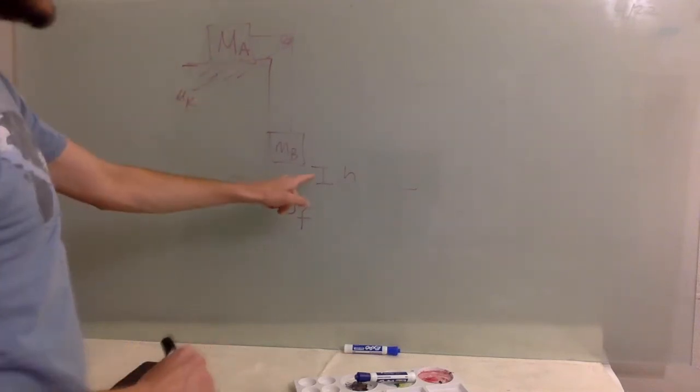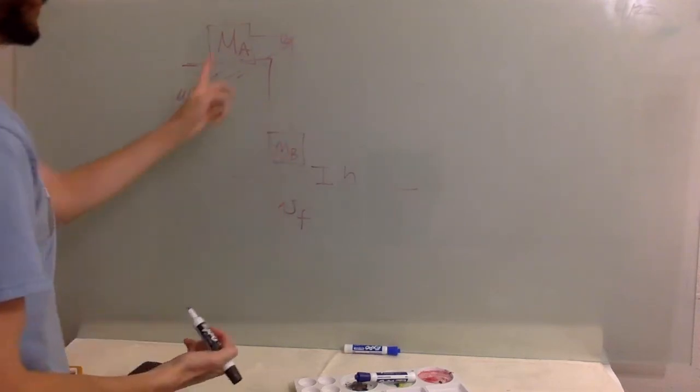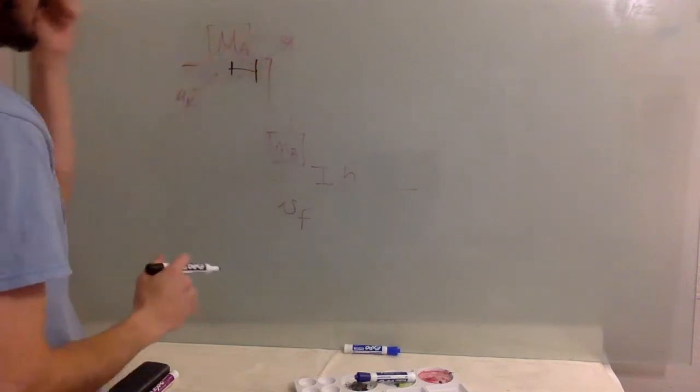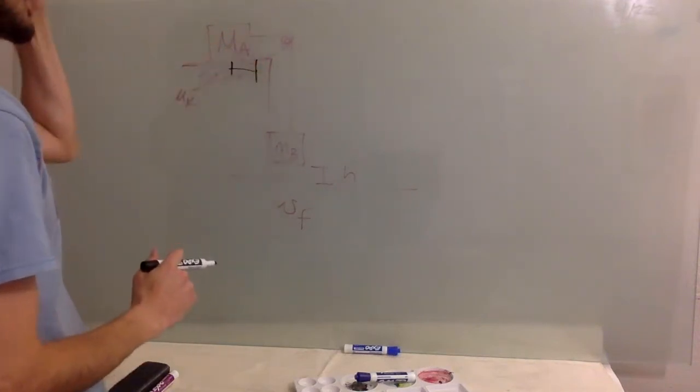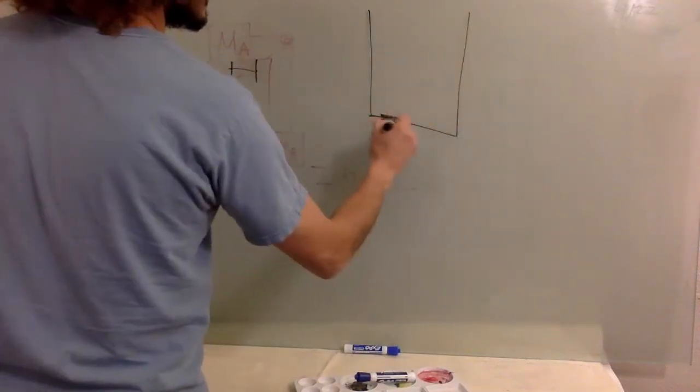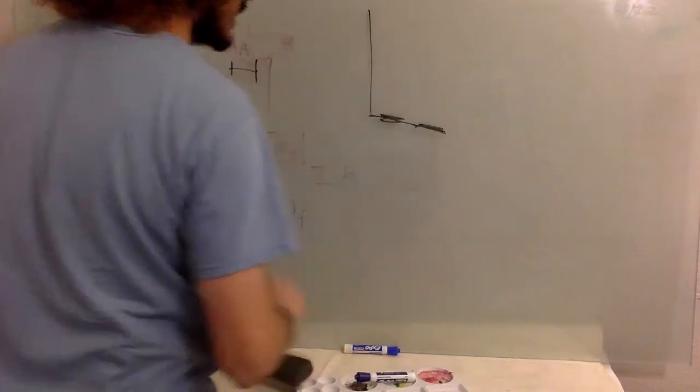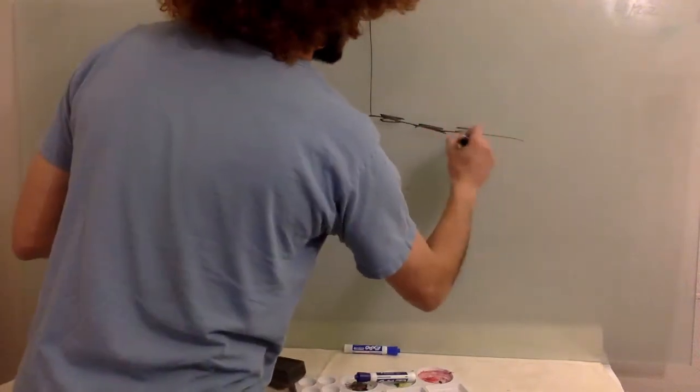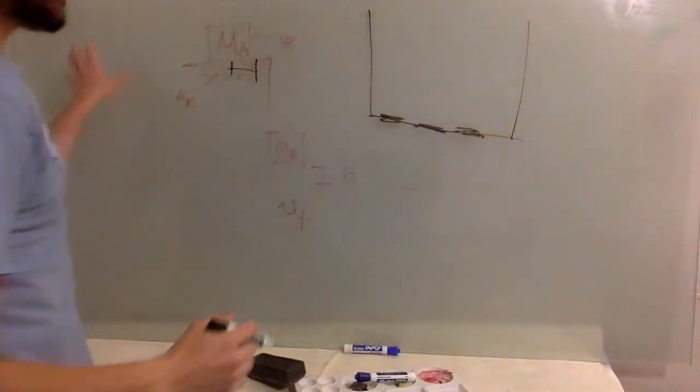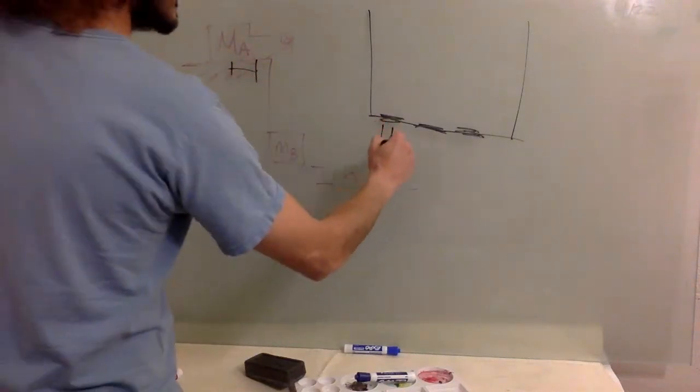So this distance h, the mass b is going to go down, is the same distance that ma is going to go this way. Initially, you can draw your energy bars, the ones that you don't eat. And at the very beginning, everything is potential, gravitational.